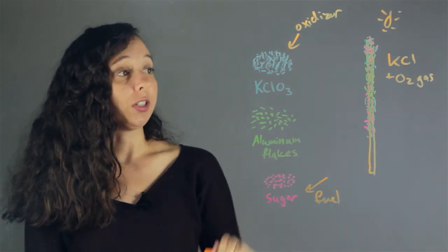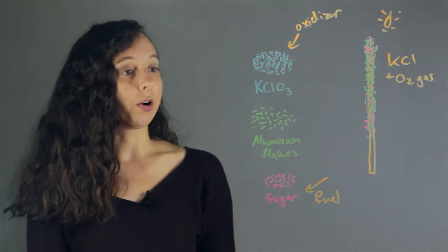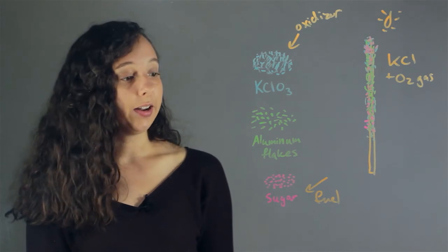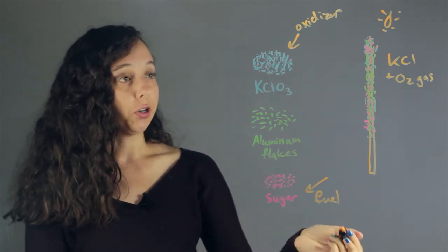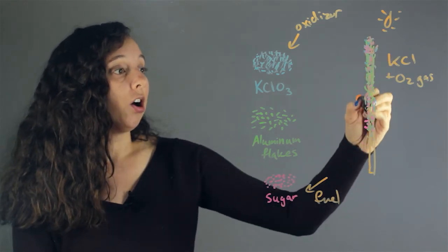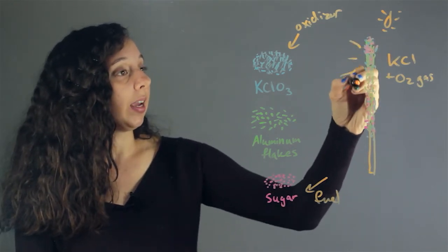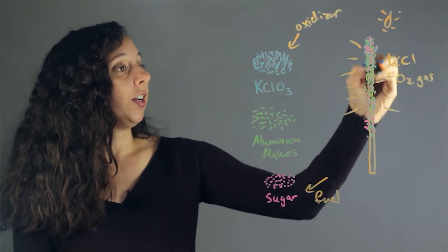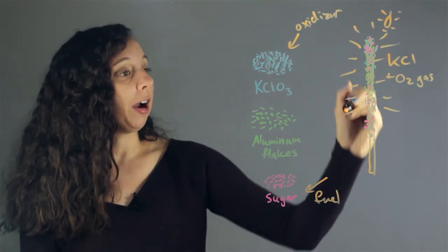And our aluminum flakes will just heat up. And as they burn up, they're going to also let off light. And then our sugar or our starch, just our fuel, will just allow the whole thing to burn evenly all the way to the ground. And it'll be very exciting and bright.